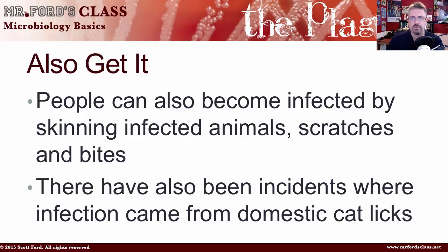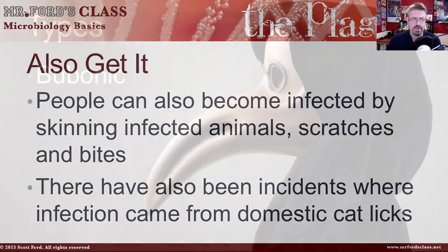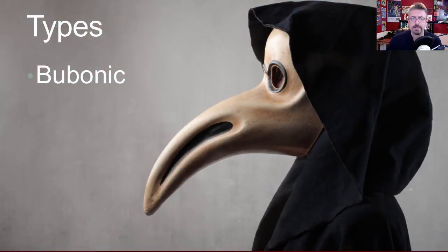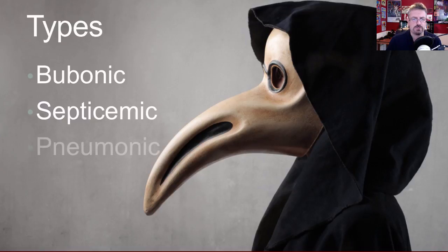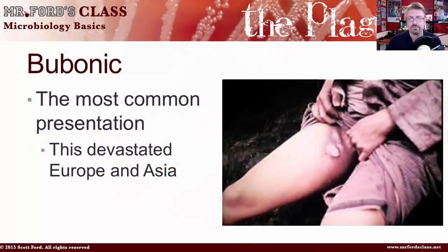There are three forms of Yersinia pestis — the plague — that I want to talk about: bubonic, septicemic, and pneumonic. Let's begin first by looking at the most famous of them all, the bubonic plague.